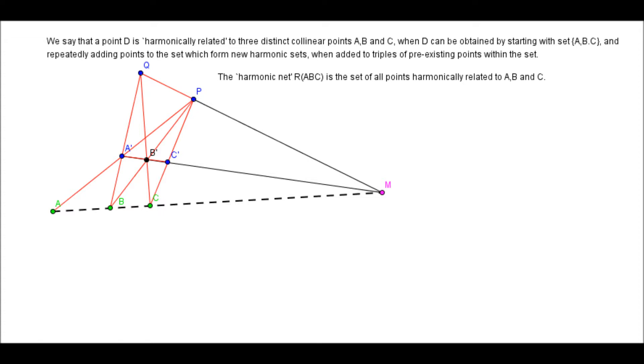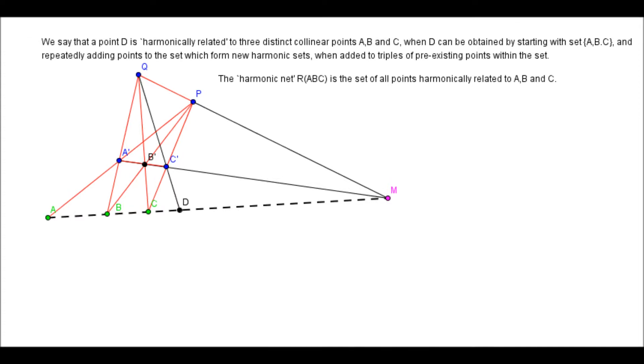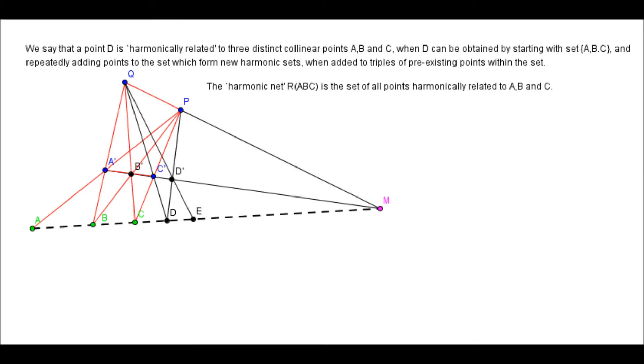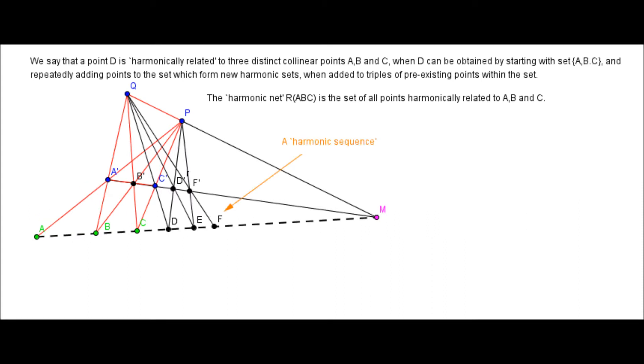So, anyway, here's one way we can generate a harmonic net. We start with A, B and C. And we can just keep generating the next points, as shown in this picture, by drawing these crisscross lines. We can get this harmonic net containing points A, B, C, D, E, and F, and so on and so forth. The set is infinite. And we call such a sequence generated in this manner a harmonic sequence.